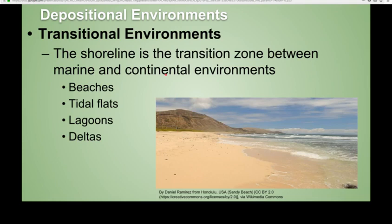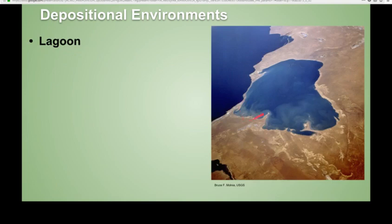For transitional environments — your shoreline environments — deltas might be the most significant, though that's fairly subjective. You can also have beaches, tidal flats, and lagoons. A lagoon is a very common transitional environment; you can see sediment floating around in a lagoon. This can create some very interesting structures, including raindrop imprints, mud cracks, and evaporites, which we talked about when discussing chemical sedimentary rocks.